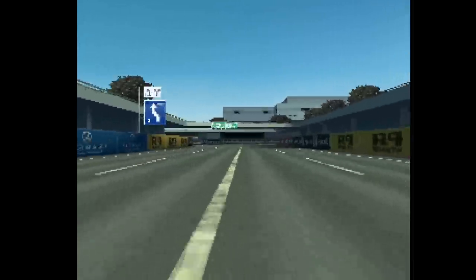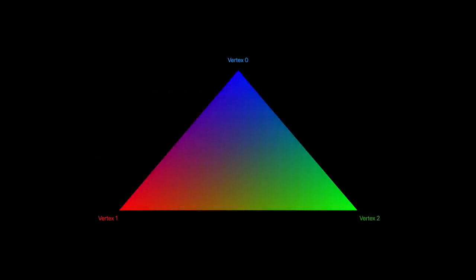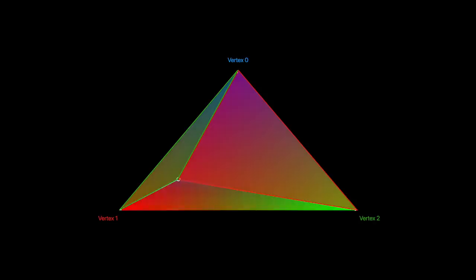Naturally, the closer a given pixel is to a vertex, the more weight we should give to that vertex. Imagine a polygon with three vertices colored red, green, and blue — if a pixel is closer to the red vertex than to the green and blue vertices, intuitively it should look more red. Without going into too much detail, the simplest way to do such interpolation is connecting the pixel of interest to the three vertices, where the weight of a vertex is directly related to the area of the sub-triangle opposing it.